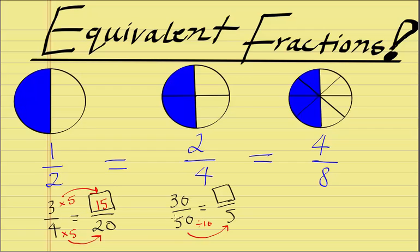And remember, whatever we do to the bottom, we also have to do to the top. In equivalent fractions, this is a must. 30 divided by 10 is 3. Therefore, 3 on 5 is an equivalent fraction of 30 on 50. Let's take a look at one last example.